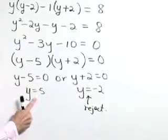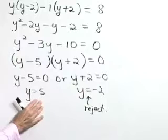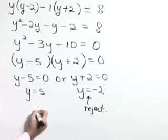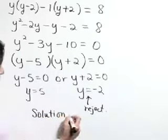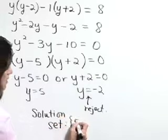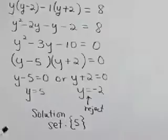But do go ahead and check this value, y equal 5. It will work in the original equation. Go ahead and check it just to make sure, but it will. So let's define this then and describe our solution set as the number 5.